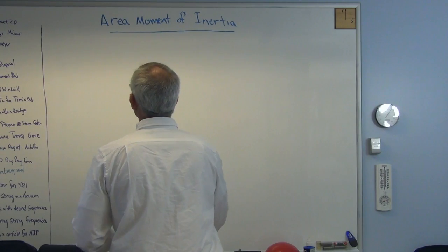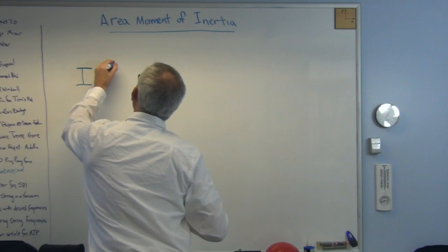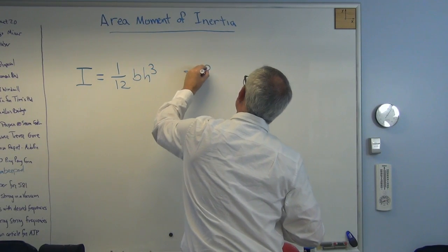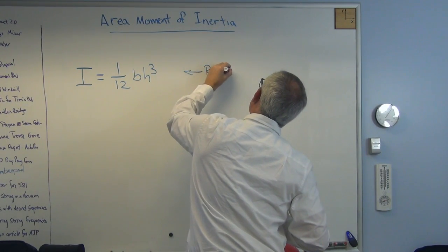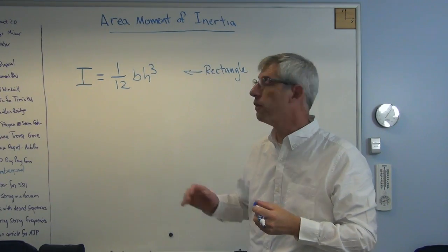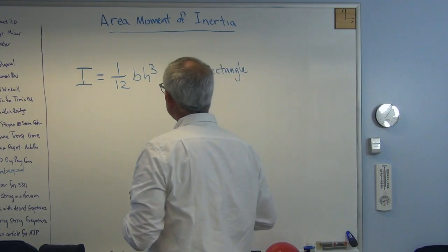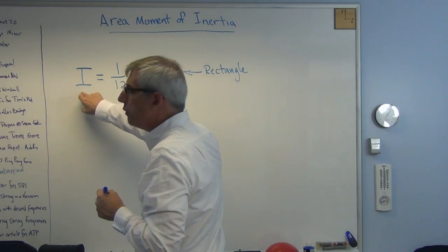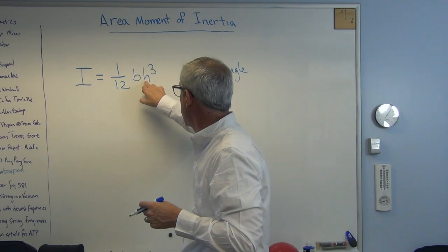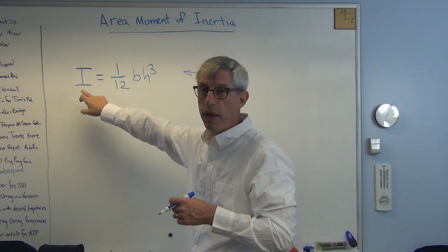So the area moment of inertia of a rectangle, and it's almost always called I. This is for a rectangle. Now, for different shapes, it's a different expression. If you don't know what else to do, just go on the web and look it up. So this is stiffness due to cross-sectional shape. If H gets big, H cubed gets really big, which means this gets really big.